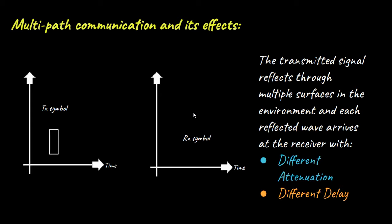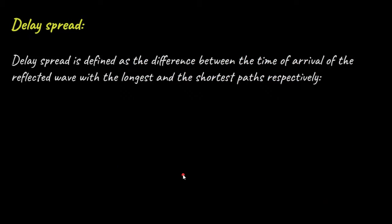As a result of combining multiple attenuated and delayed copies of the transmitted signal at the receiver, the signal at the receiving end looks something like this. This apparent spreading of the transmitted signal in the time domain due to multi-path reflections is characterized by a term called delay spread. Delay spread is defined as the difference between the time of arrival of the reflected wave with the longest and the shortest path respectively.